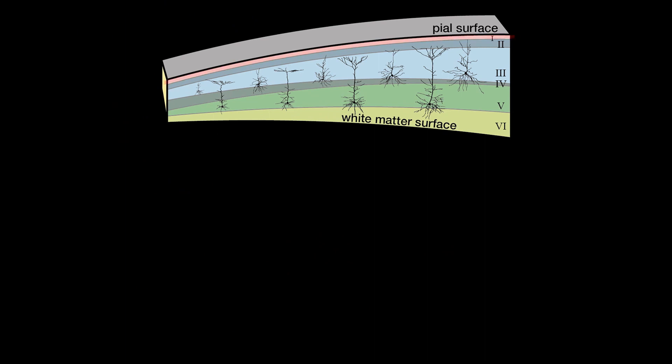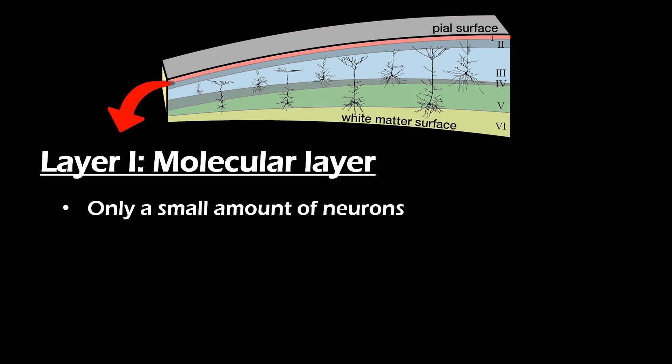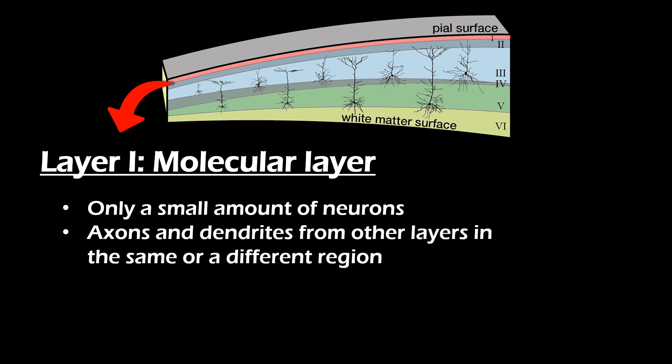The first layer, also known as the molecular layer, is the most superficial layer. This layer only contains about 0.5% of all neurons that can be found in the six layers. So rather than neurons, this layer mostly consists of axons and dendrites that come from pyramidal neurons that are found in the other layers. On top of that, there are also glial cells.